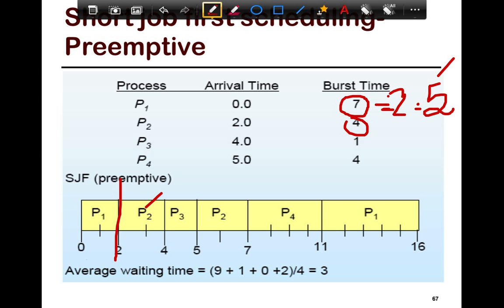So then you run P2 for two time slice units, and then you would notice that at time four, when P3 arrives, P3's burst time one is less than P2's burst time left, which is two. So then you schedule P3, and P3 runs to completion. And then at that point, you again compare P1 and P2, and P2 has a shorter one, which is two, so you run P2 to completion.